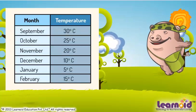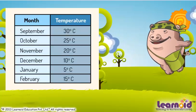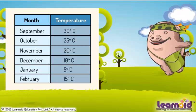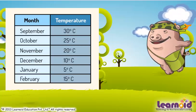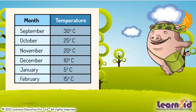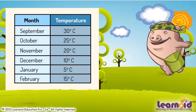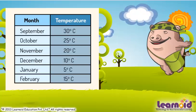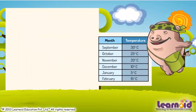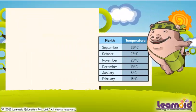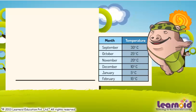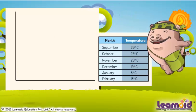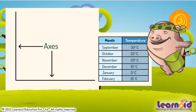Let's see the record of temperature in winter months. We will show temperature vs month information graphically by Line Graphs. To draw a Line Graph, we draw one horizontal line and another vertical line. We call them Axes.